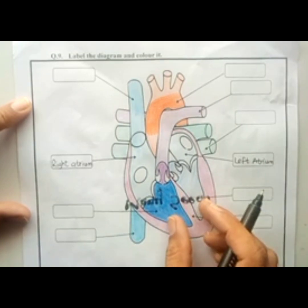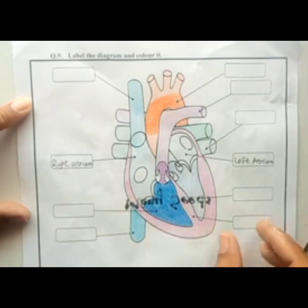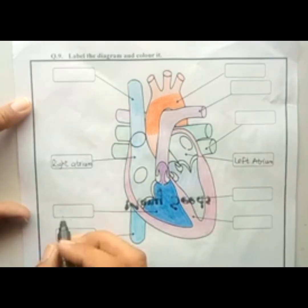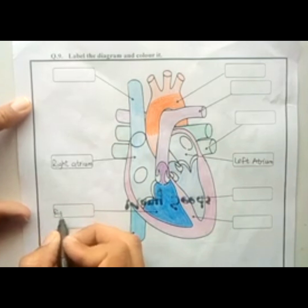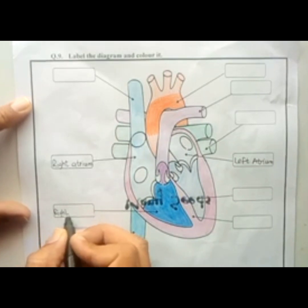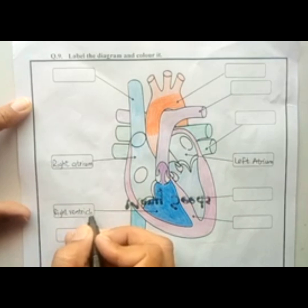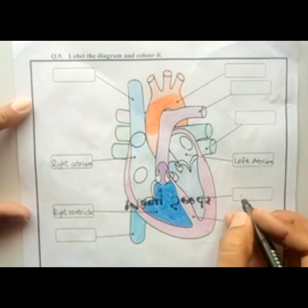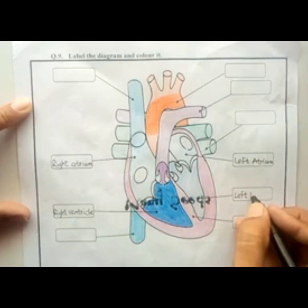The lower two thick-walled chambers of the heart are known as the right ventricle and the left ventricle. We label these here on the diagram.